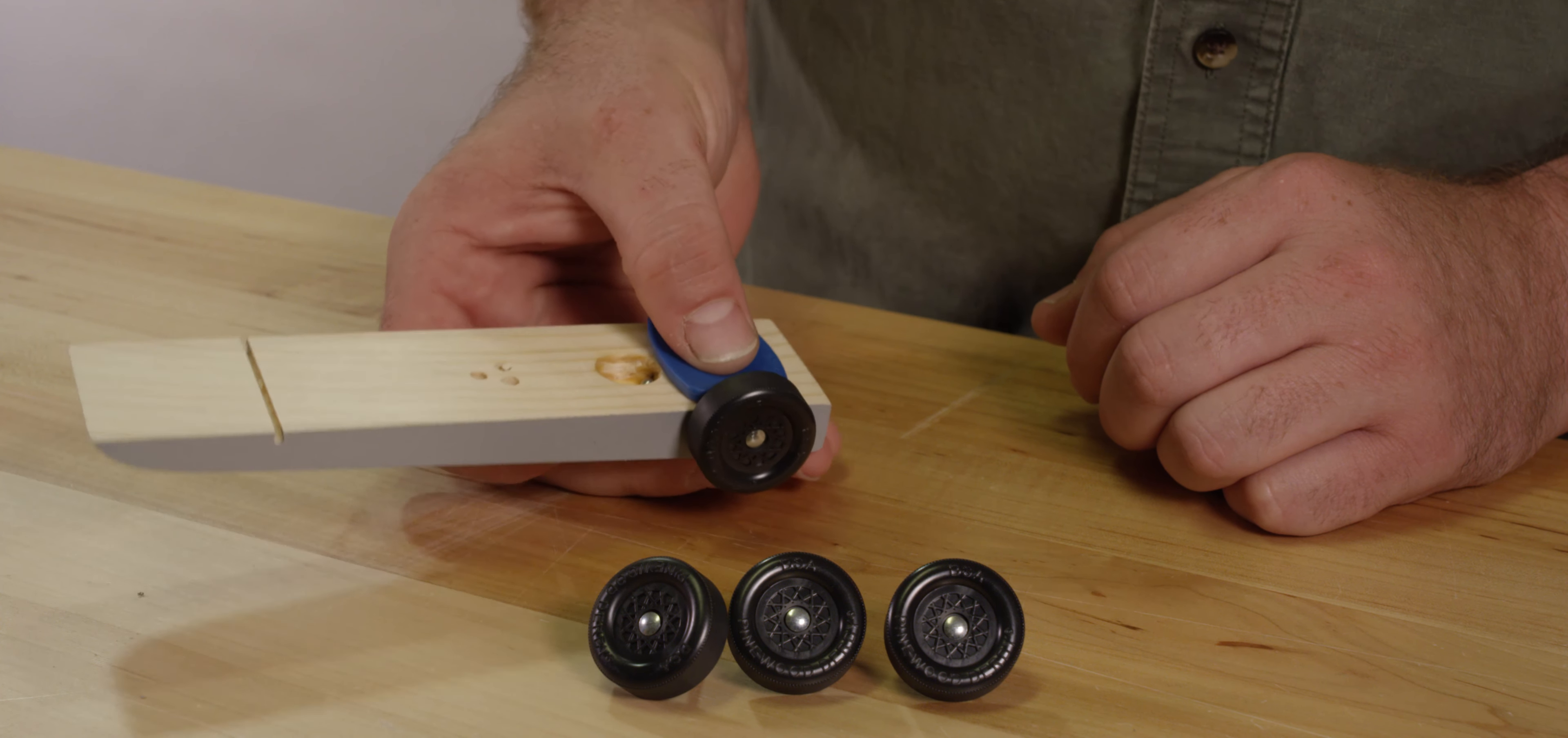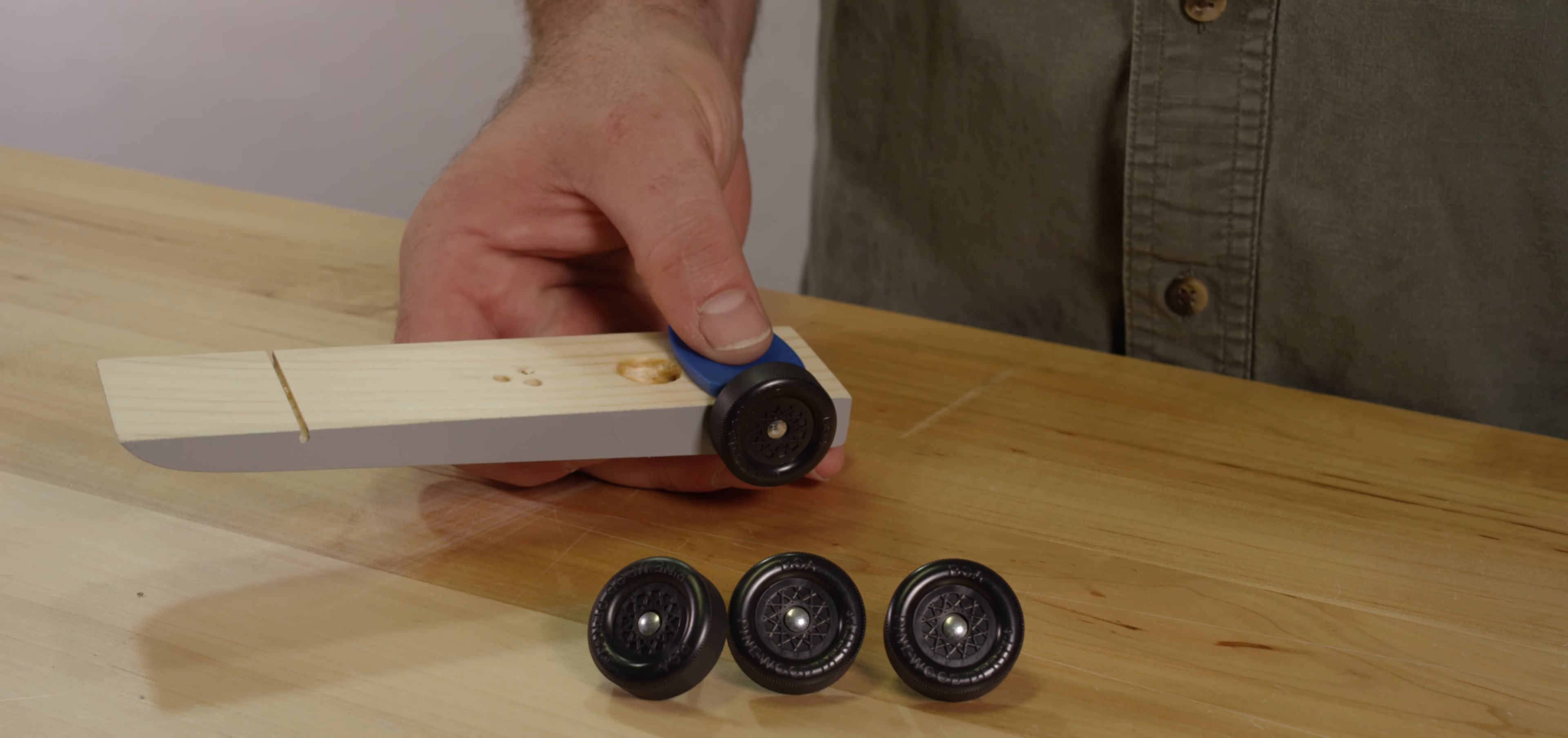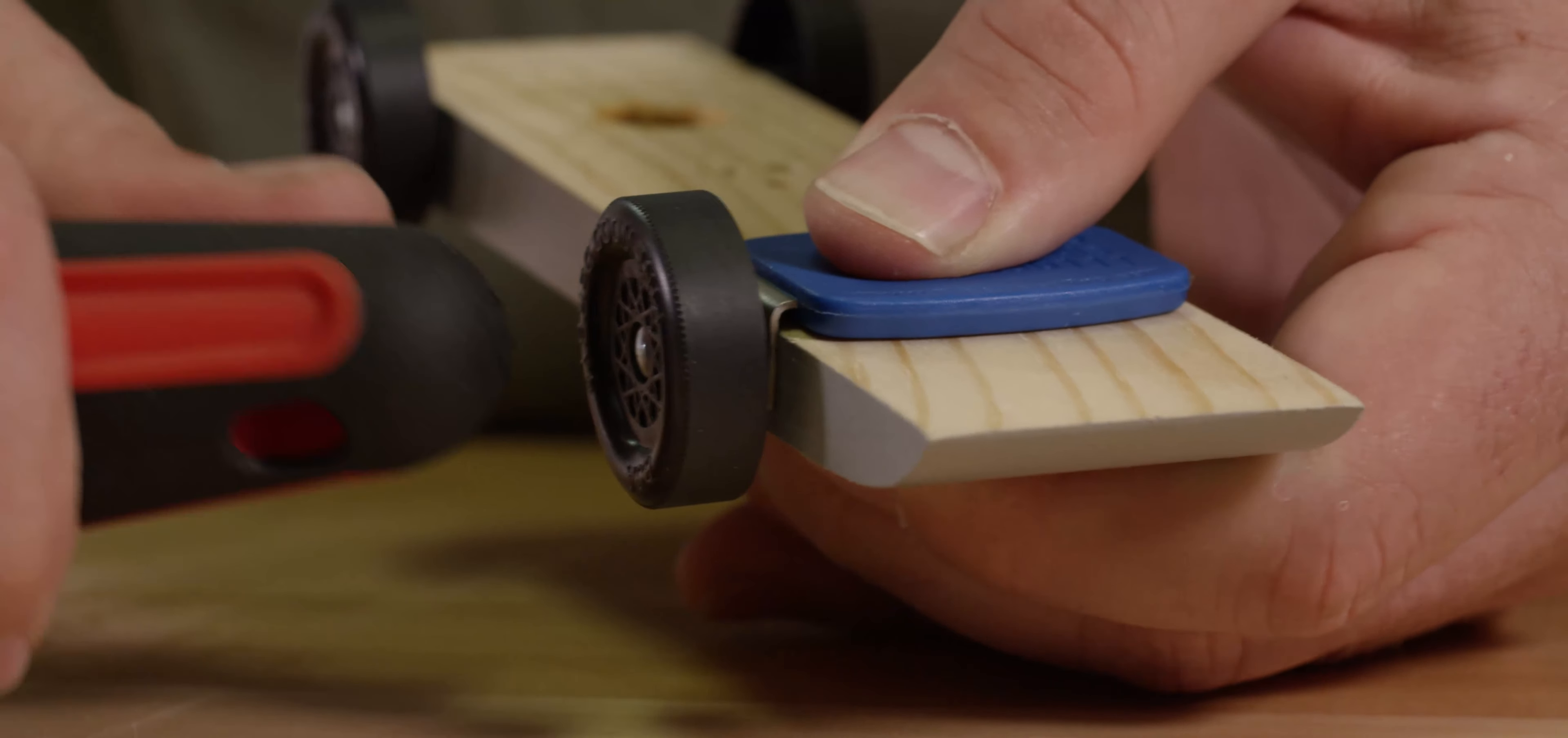Now since the wheel stopped the axle from going in all the way, you need to push the axle in a little further. With the Pro Axle Guide still installed, push on the axle head with the handle of a screwdriver until the wheel is snug against the wheel spacer.